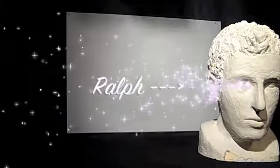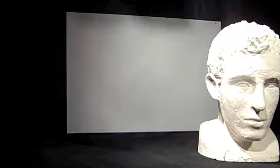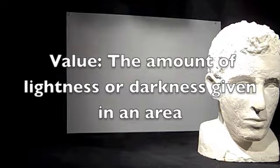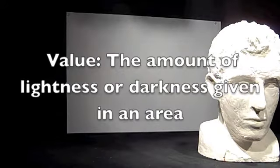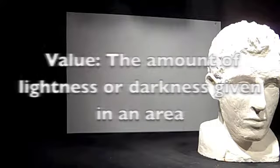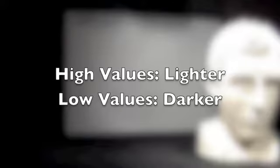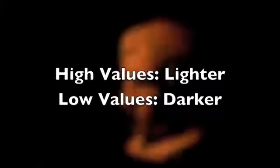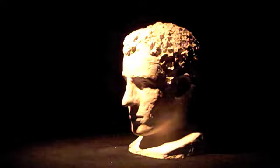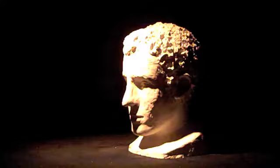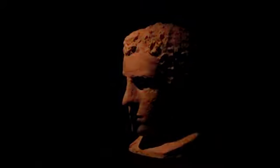Now before we begin, let's review what value actually is. Value means the amount of lightness or darkness given in an area, with high values describing lighter areas and low values describing darker. In lighting, we use value a lot. There are two kinds of value: flat value and transitional value.